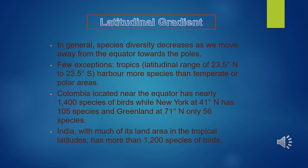The largely tropical Amazon rainforest in South America has the greatest biodiversity on Earth. It is home to more than 40,000 species of plants, 3000 of fishes, 1300 of birds, 427 of mammals, 427 of amphibians, 378 of reptiles, and more than 1,25,000 invertebrates. Scientists estimate that in these rainforests there might be at least 2 million insect species waiting to be discovered and named.